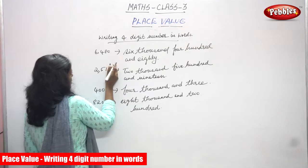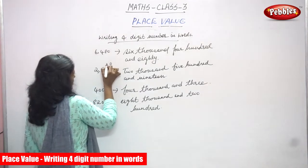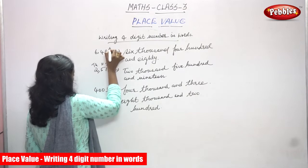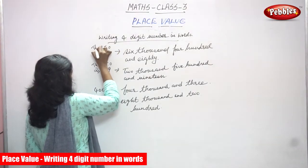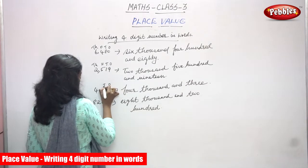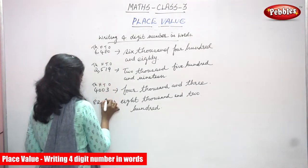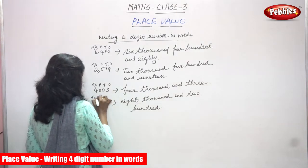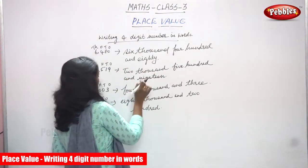So you want to write: ones, tens, hundreds, and thousands. Once more: ones, tens, hundreds, then thousands. So here also ones, tens, hundreds, then thousands. So, four-digit number — you have to write in words.